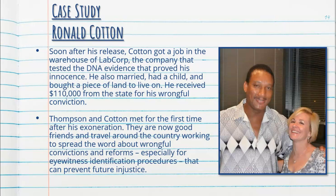Soon after his release, Cotton got a job at the warehouse of LabCorp — the company that tested the DNA evidence that proved his innocence. He also married, had a child, bought land, and received $110,000 US dollars from the state for his wrongful conviction. What makes this case more fascinating is that Jennifer Thompson and Ronald Cotton met after his exoneration and are now very good friends, travelling together to spread awareness about wrongful convictions and reforms in eyewitness identification procedures.